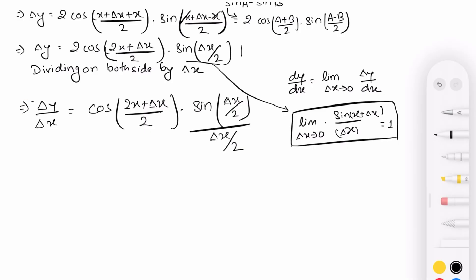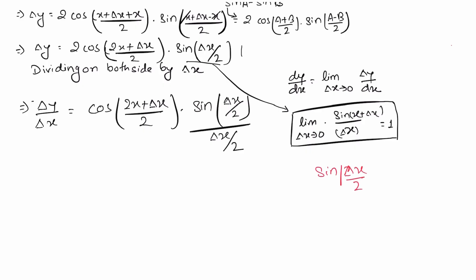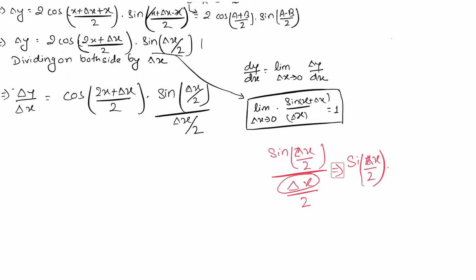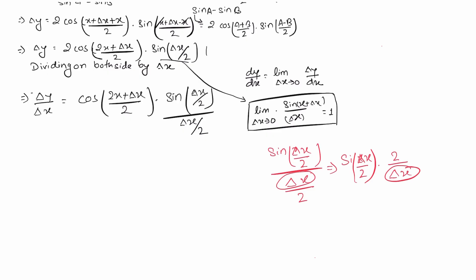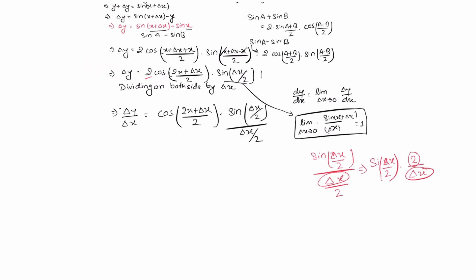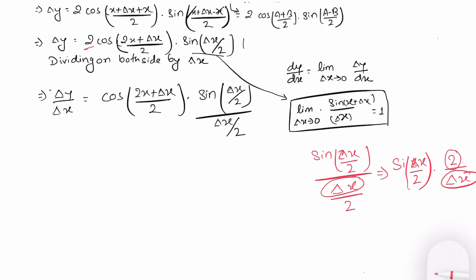Let me clarify the division step using another color. We have sin(delta x / 2) divided by (delta x / 2). This is the same delta x that we are dividing on the right-hand side — sin(delta x/2) as it is, multiplied by 2 upon delta x. This 2 cancels with the 2 already present. I have not added anything; I simply divided both sides by delta x.